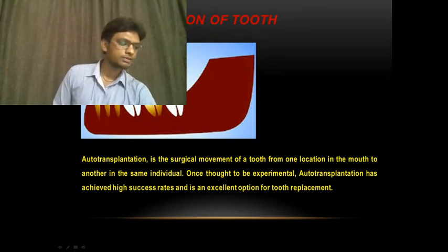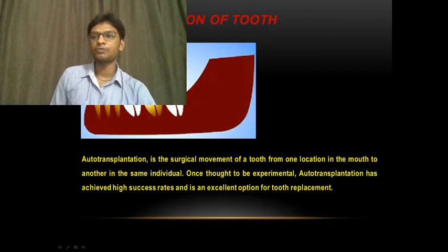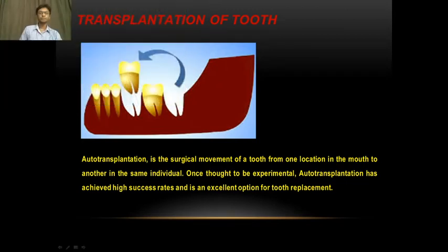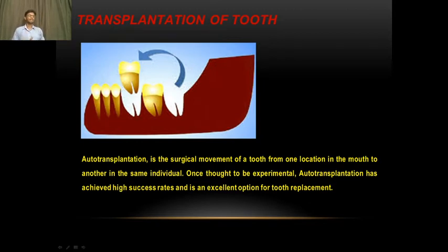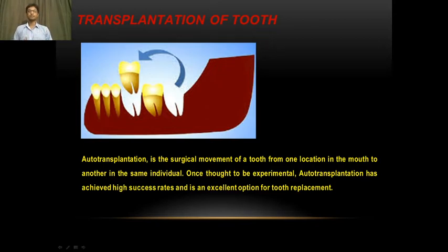Transplantation of a tooth means surgically taking a tooth from one position and refixing it to another position in the same individual. For example, you extract a highly placed canine, extract a premolar to create a socket, and place the canine into the premolar socket. Once thought to be experimental, autotransplantation has a high success rate and is an excellent option for tooth replacement.